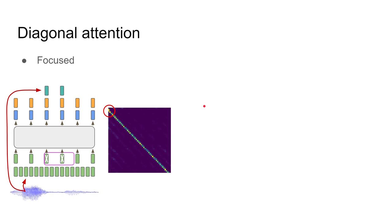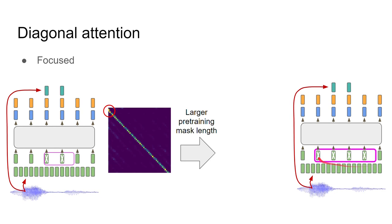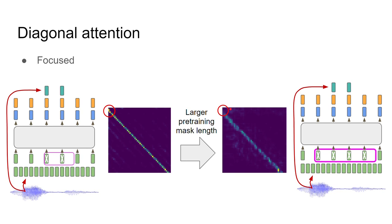Some diagonal attentions are highly focused. They are easily interpretable, since neighbor frames are in no doubt helpful for reconstruction, because speech signal is continuously varying. Interestingly, they typically avoid the main diagonal either shift to left or right. And as we increase the pre-training mask length, we obtain a larger shift. This suggests that attentions are aware of pre-training mask length and avoid the masked features, which are not helpful for reconstruction.